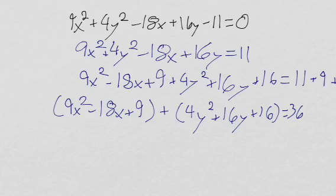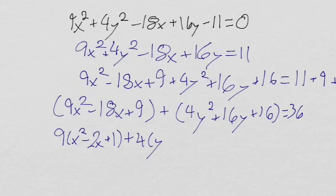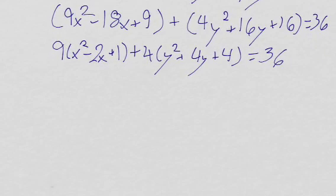On this left side I can factor out a 9, so I will get 9 times x squared minus 2x plus 1, plus on this right side we can factor out a 4: 4 times y squared plus 4y plus 4, equals 36. This left term factors to x minus 1 squared, so we will keep that 9 times x minus 1 squared, plus 4 times y plus 2 squared.